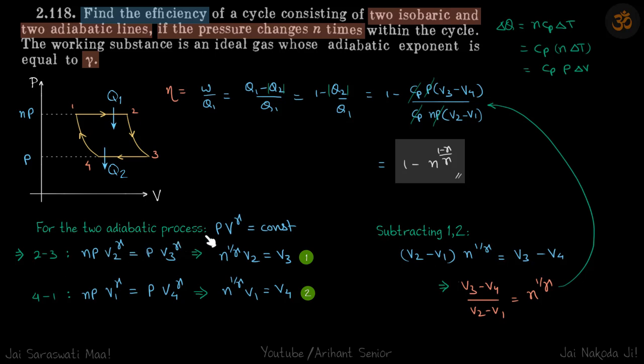For both the adiabatic processes, for 2 to 3, we are going to use this equation. From 2 to 3, nP into V2 raised to power gamma is equal to P into V3 raised to power gamma. And from 4 to 1, so let's write for 1 first: nP into V1 raised to power gamma.